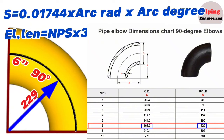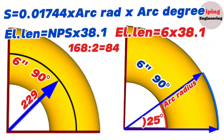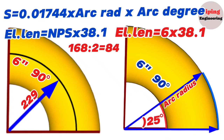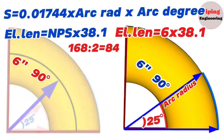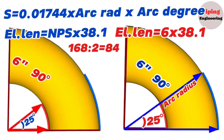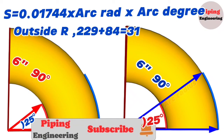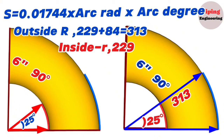The outside diameter is 168.3 millimeters, so half equals 84 millimeters. Adding 84 to 229 gives the outside arc radius: 313 millimeters. Subtracting 84 from 229 gives the inside arc radius: 145 millimeters.